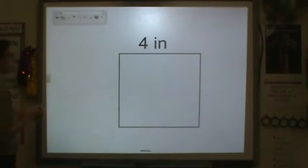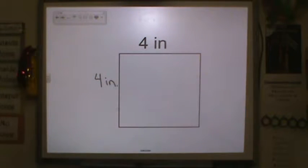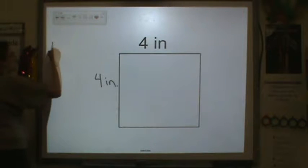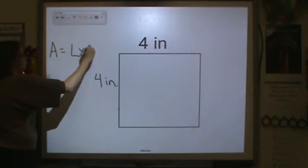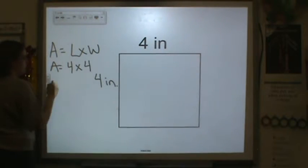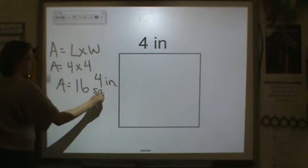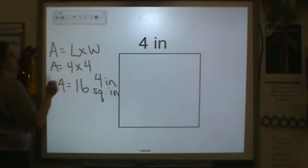Now again, we have a square. So if it's a square, we know that the length and the width are the same. So we know area is equal to length times width. The area is equal to 4 times 4. That means that the area is 16. Since we're doing area, you have to do square units.